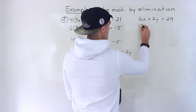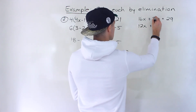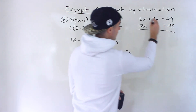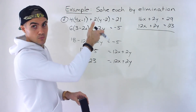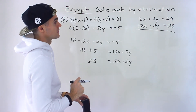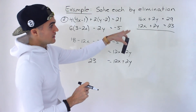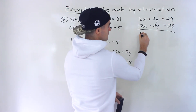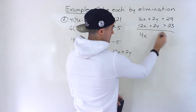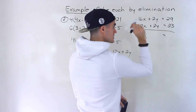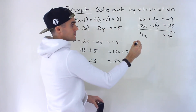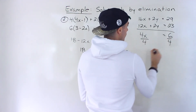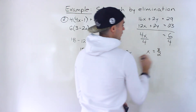It's actually pretty nice because we have two y's that are the same, so we don't have to multiply anything in this case. We could just get rid of the y's right there. Because they're the same sign, we're going to subtract this from that. So we'll have 16x minus 12x, which gives us 4x. 2y minus 2y gives us 0. 29 minus 23 gives us 6. So we have 4x is equal to 6. Divide by 4 — x equals 3 over 2.